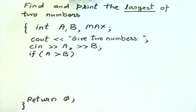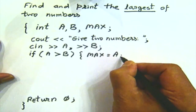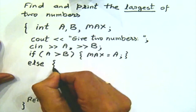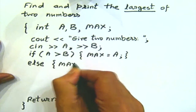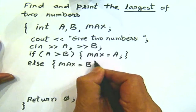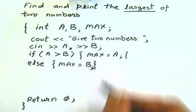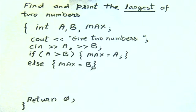What is the condition you'd like to write? And if that is so, what do I want to do? I want to consider A to be the largest and assign it to max. Else — all right, else — I will have to output that.